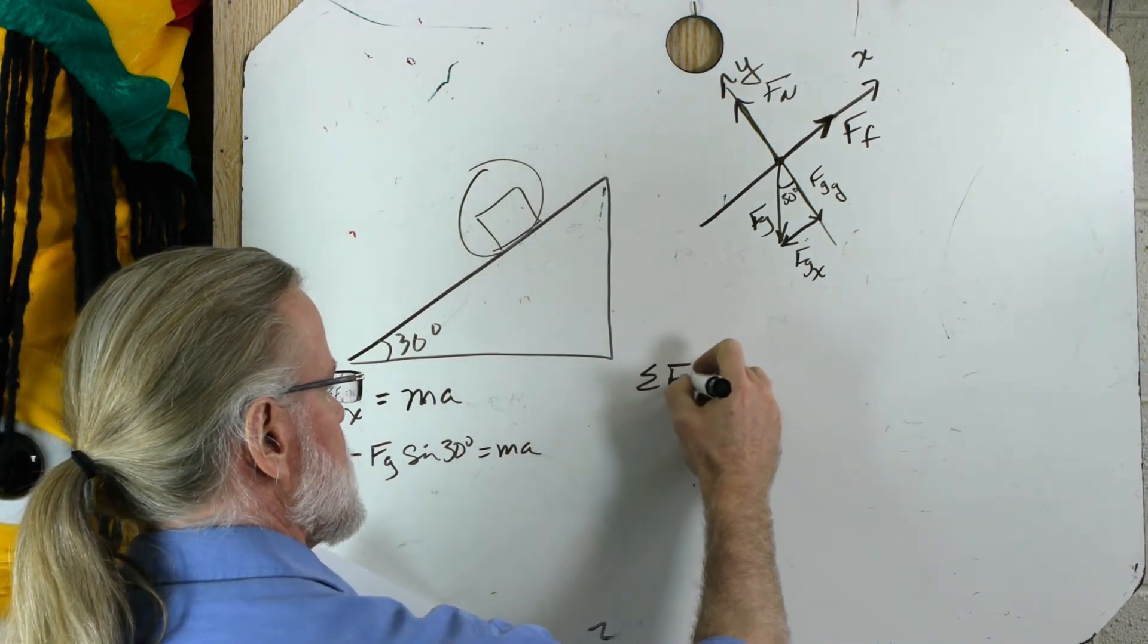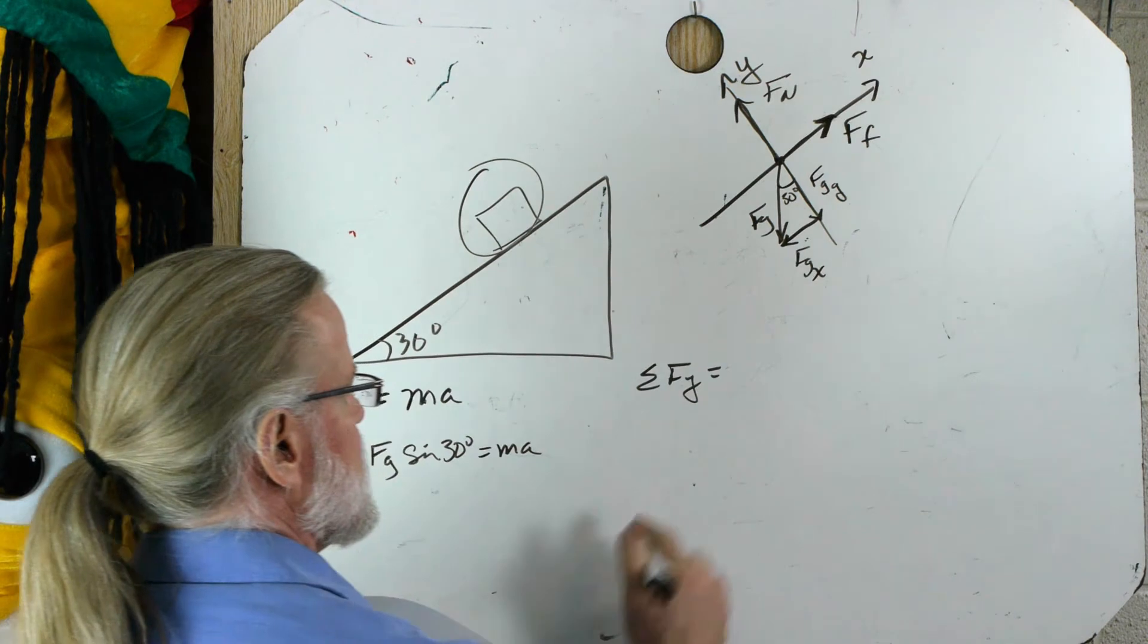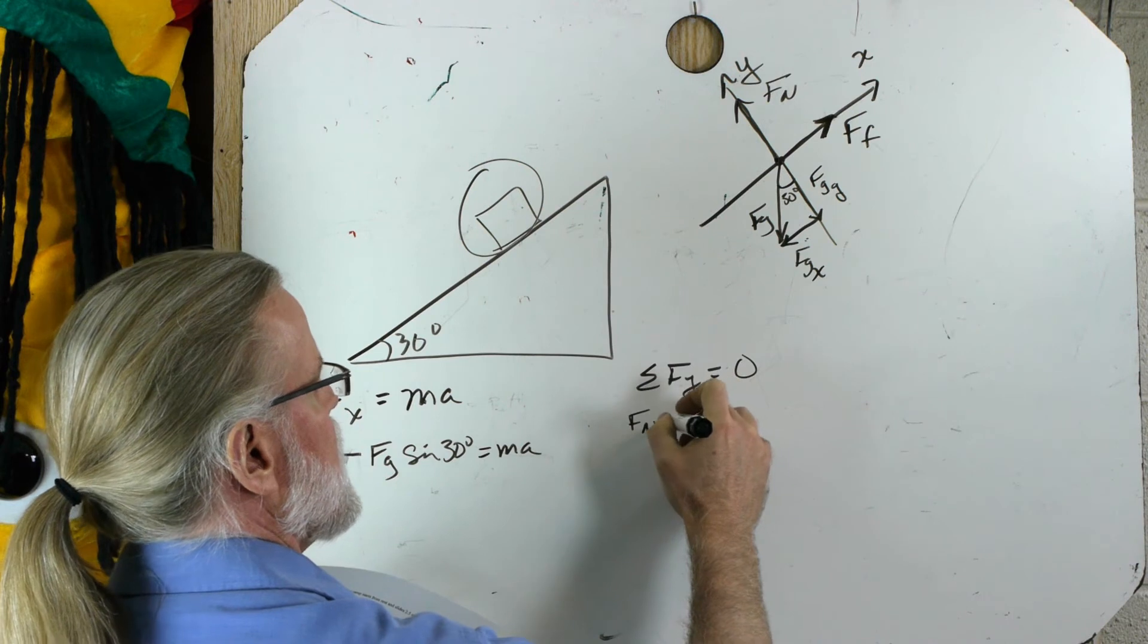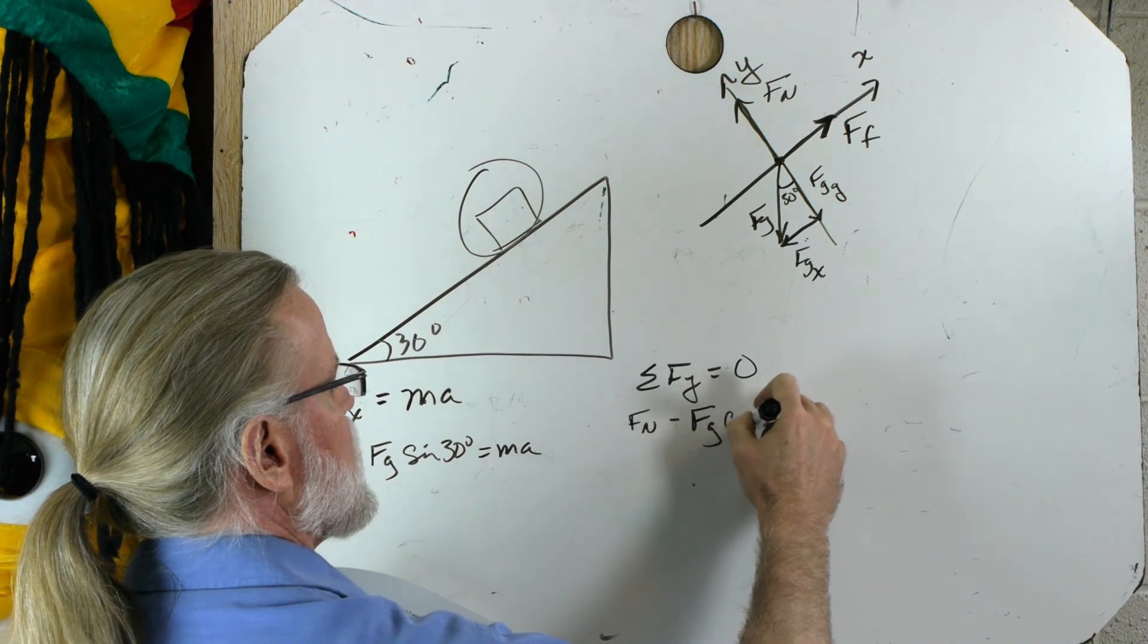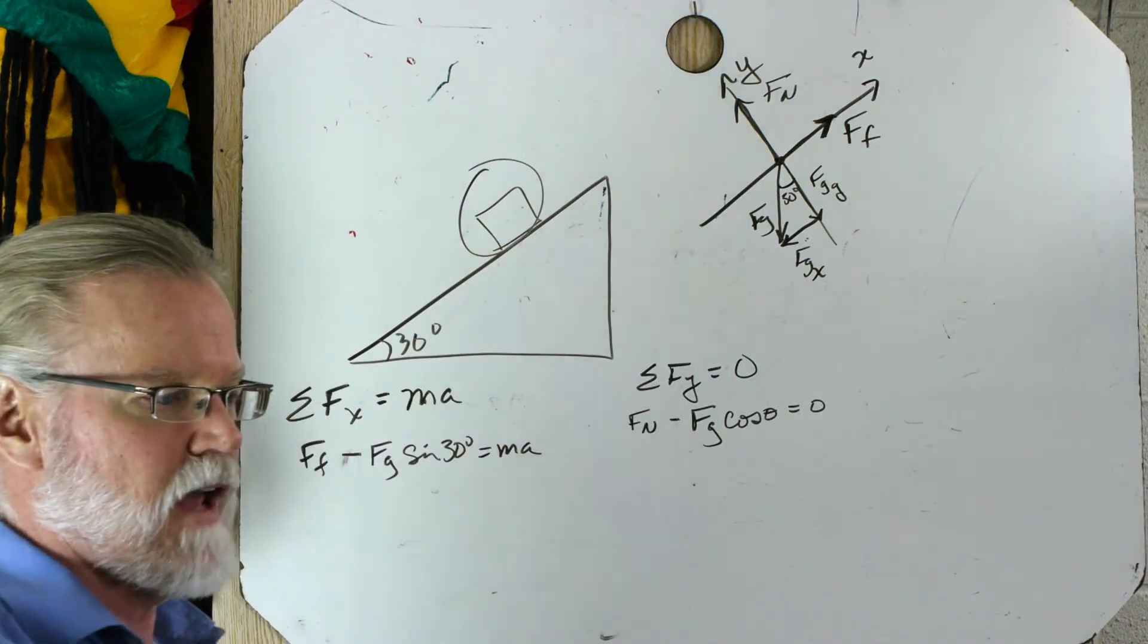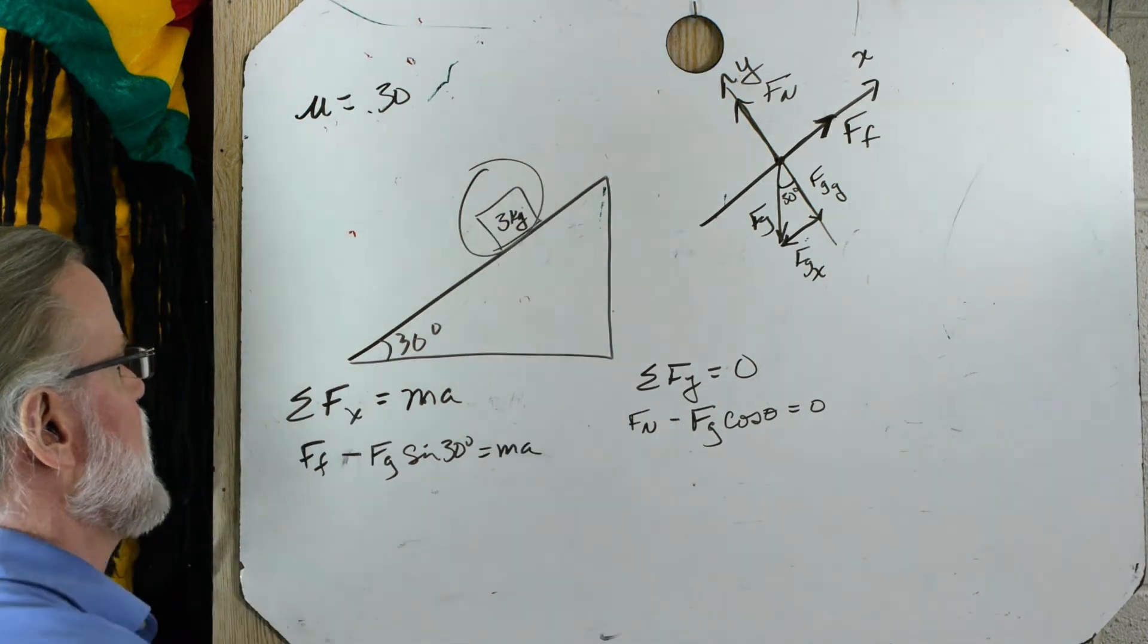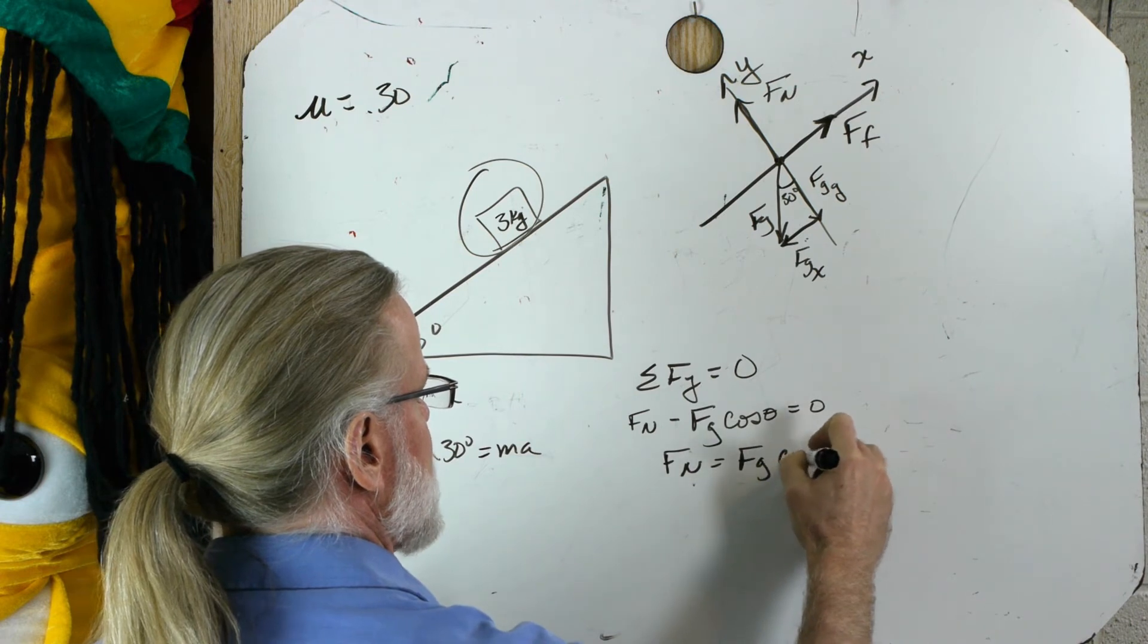In the y direction, and we're going to need the y direction because we're going to need the normal force to figure out what the force of friction is in this problem. There's going to be no acceleration. This is not going to accelerate in this direction. So we have f normal is positive and minus the force of gravity in the y direction, which is fg cosine of theta equals zero. And let's see. This is wood on wood and it's sliding. 0.30 is the coefficient of friction. We must have the mass here. Three kilograms. The normal force equals fg cosine of theta. And we want the acceleration.